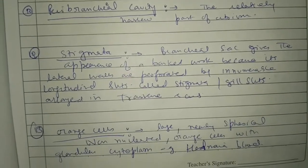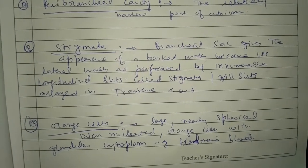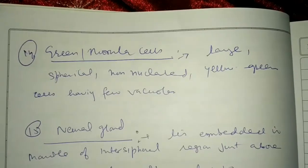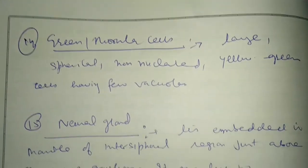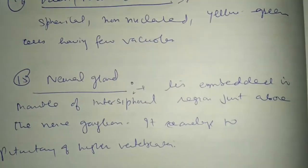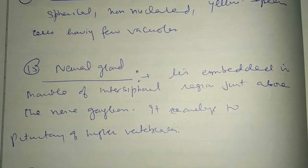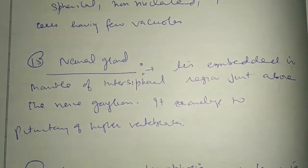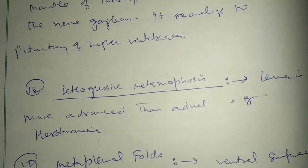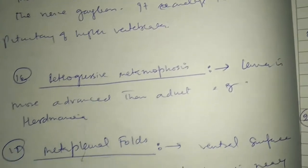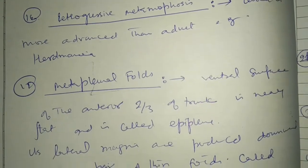Next, orange cell. Next, green cell. Next, neural gland. Retrogressive metamorphosis, meta plural fold.